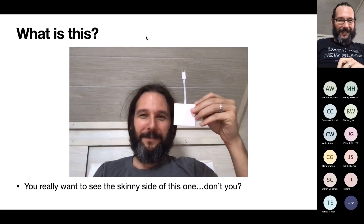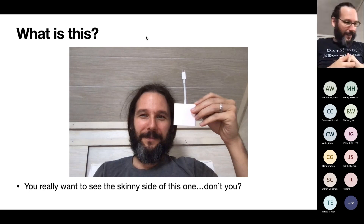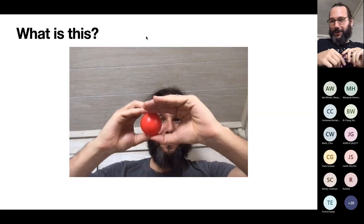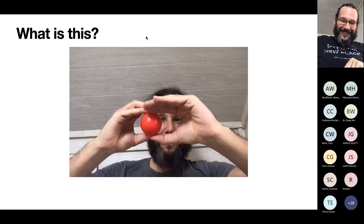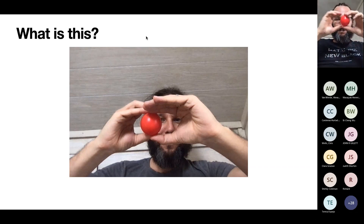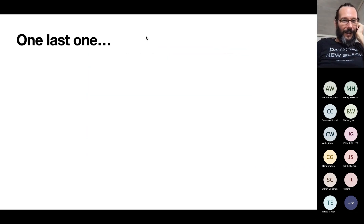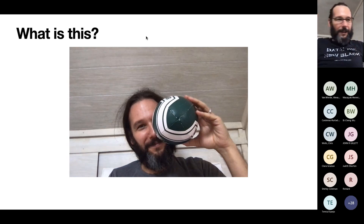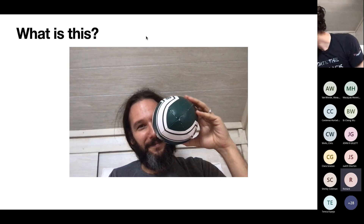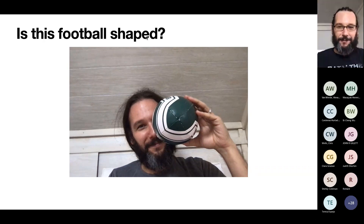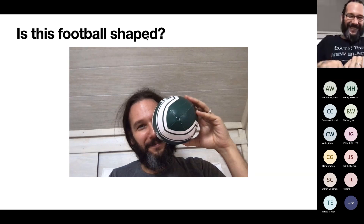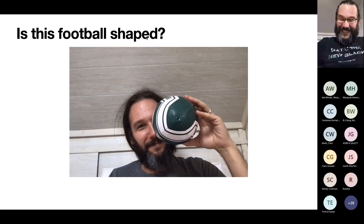Now I have two counterexamples. This one — I'm showing you the biggest dimension, but you really want to see the skinny side. If someone says 'I need an adapter' and you hand them that, they'd say 'is this the right adapter? I need to see the skinny side.' That's a counterexample. And this one — anybody know? It's just a ball. It doesn't have a long back dimension — I'm kind of playing around making it look deep, but it's just a ball. And a football — yes. Is it football-shaped? It's not football-shaped in that dimension — isn't that funny?